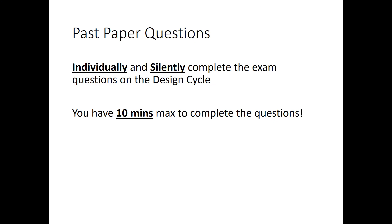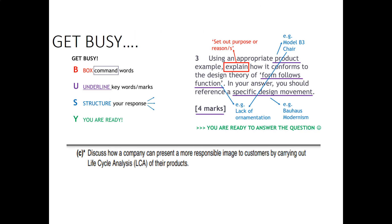Now we're going to do some past paper questions. Write these down and attempt them on your own before watching the answer. We're going to break them down together and I'll show you exactly how to answer them. The method we're going to use is called 'Get Busy' — it's a way of breaking down the exam question. If you have a command word, put a box around it, underline any keywords, note how many marks to structure your response, then attempt to answer it.